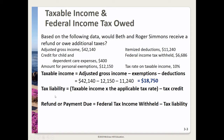From there we can calculate the tax liability — what do we owe in taxes? We'll take our taxable income times the applicable tax rate, then subtract the tax credit. The tax rate is given at 10%, so we don't have to work with tax brackets just yet. We take our taxable income of $18,750 times 0.10, then subtract the tax credit for child and dependent care expenses of $400. We get a tax liability of $1,475.